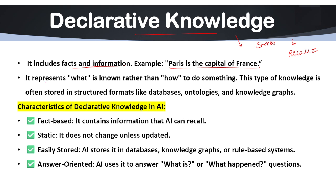Declarative knowledge represents what is known rather than how to do something. Always remember the keyword: declarative knowledge is always related to knowing what. It is factual knowledge about things, concepts, and relationships between events or nodes. It answers 'what is this?' or 'what do we know about it?' — it always uses 'what.'